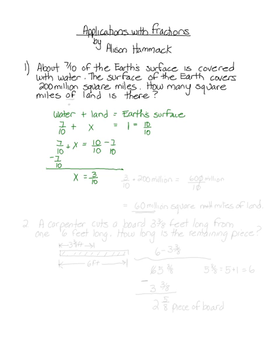So we know that three-tenths of the Earth's surface is covered by land. We need to know how many square miles of land there is. The surface of the Earth covers two hundred million square miles. How many square miles of land is there? So 'of' means to multiply.